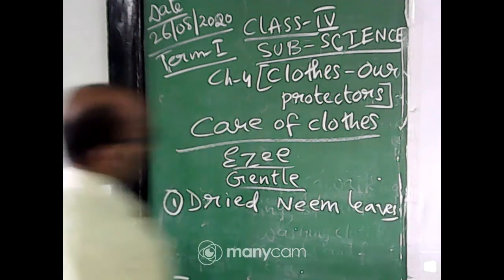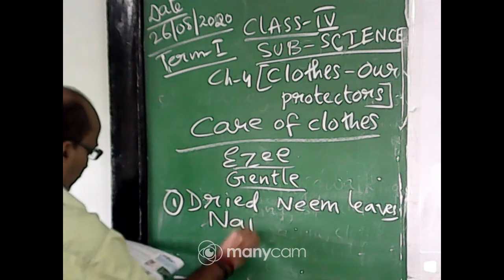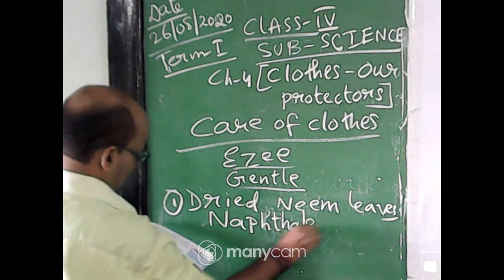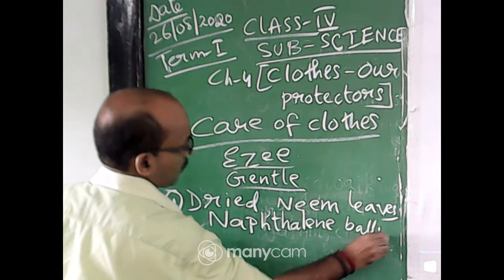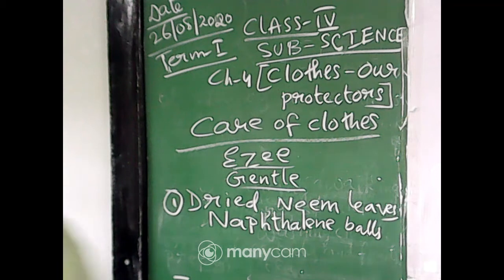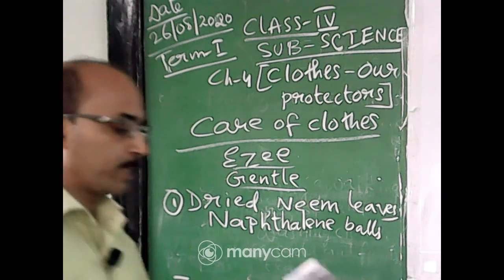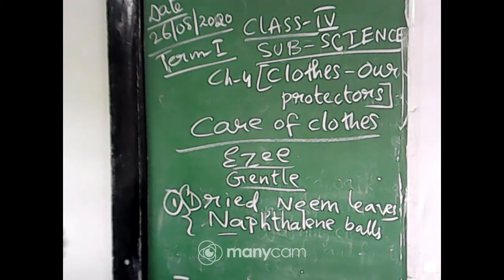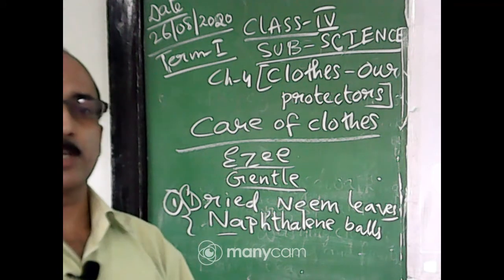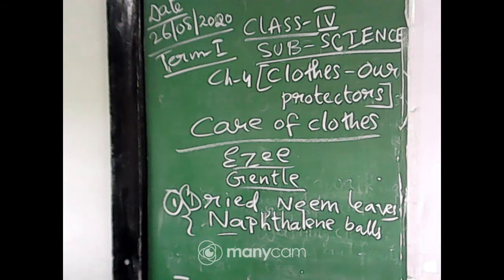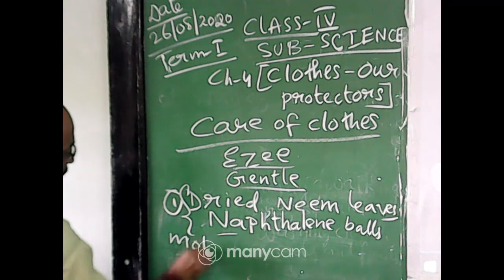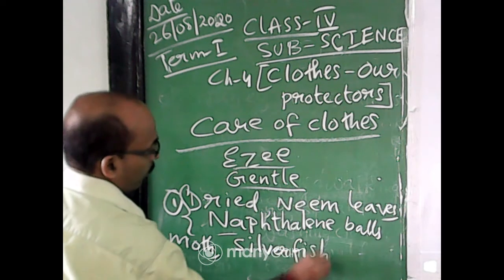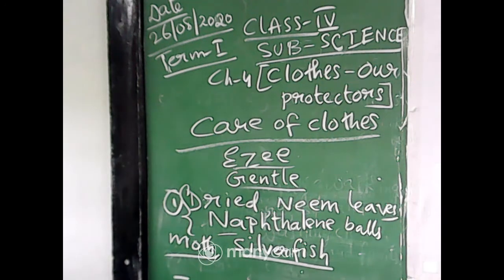Another thing to keep with woolen and silk clothes is naphthalene balls. We keep dried neem leaves and naphthalene balls with the clothes because some insects — moth and silverfish — are very harmful for these clothes. Remember these names: moth and silverfish.